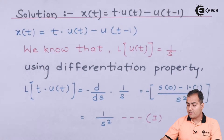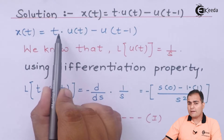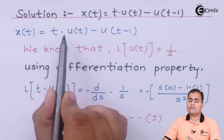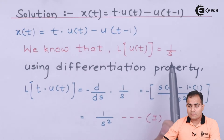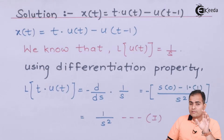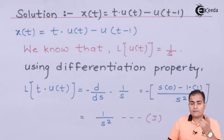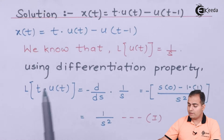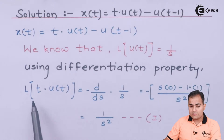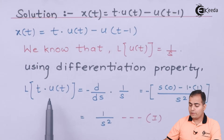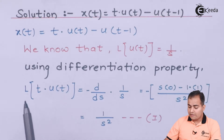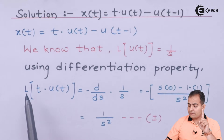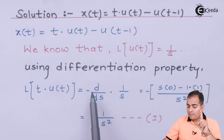The first part is t·u(t). If we apply the Laplace transform of this function directly, you should know the Laplace transform of u(t), which is 1/s. Now, since the Laplace transform of u(t) is 1/s, you can directly apply the frequency differentiation property on it. According to the differentiation property, because t is multiplied with u(t), I am going to use that property. Since my function is differentiated only once, I have placed minus 1 times d/ds of 1/s.